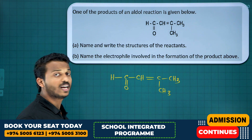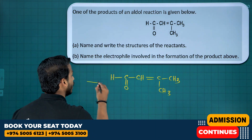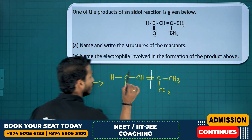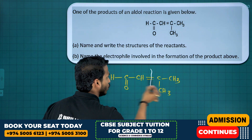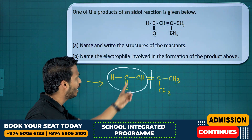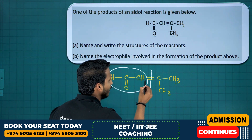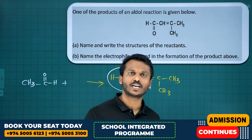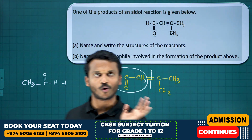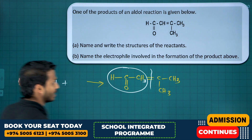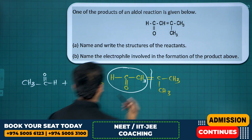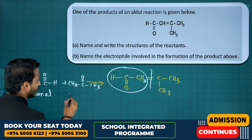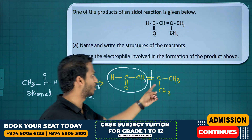One of the products of an aldol condensation reaction is given. Name and write the structure of the reactants. The aldol condensation product is given as HC=O–CH=C(CH₃)–CH₃. To find the reactants, cut at the double bond part. One part gives CHO — that is an aldehyde — so first compound is CH₃CHO (ethanal). The other part should be a ketone: CH₃COCH₃ (acetone/propanone). So the two reactants are ethanal and acetone. When they undergo aldol condensation, you get this product.